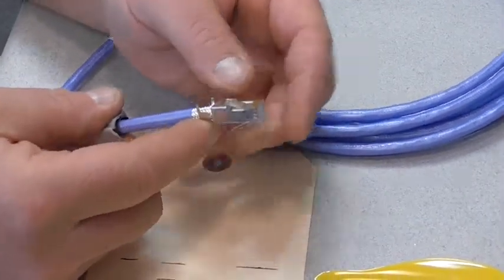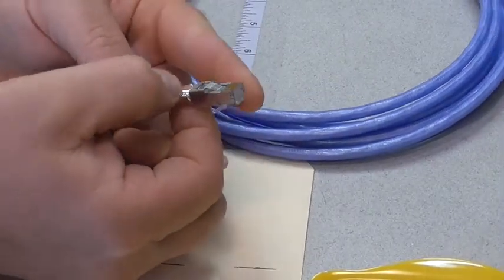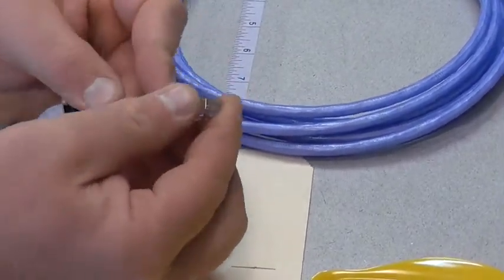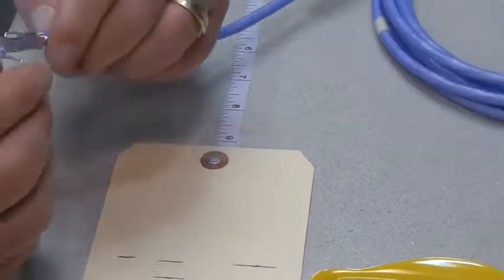Seat all wires fully into the connector until the stranded conductors of each wire are visible through the front end of the connector body. Use magnification as needed.